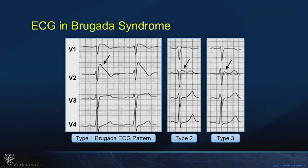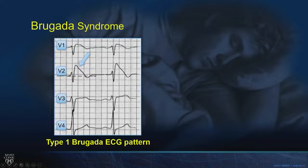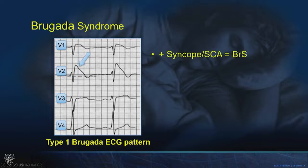Type 2 and 3 patterns matter only if they convert to type 1 by moving leads up the intercostal space toward the head — the high lead maneuver — or in the setting of fever, or with a sodium channel blocker challenge test using ajmaline, flecainide, or procainamide. The type 1 pattern is the portal of entry. You must have it spontaneously, with fever, with sodium channel blocker challenge, or with high lead placement. If you have type 1 and the patient fainted or had sudden cardiac arrest, that's symptomatic Brugada syndrome — ICD-worthy Brugada syndrome.